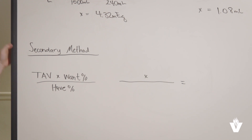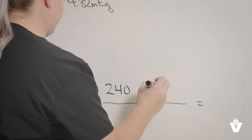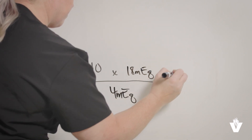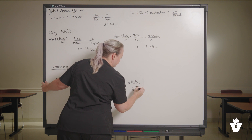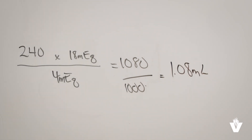There is a secondary way to calculate this for the additives as well. You can use the total actual volume multiplied by the desired milliequivalents — wanted based on the order — and divide that by the in-stock milliequivalents. The only difference is that because the order is based on liters and the pharmacy stock is based on milliliters, there will be one extra step at the end. For sodium chloride: 240 milliliters multiplied by 18 milliequivalents, divided by 4 milliequivalents, totals 1,080. That is then divided by 1,000 due to the order being based on milliequivalents per liter, giving a final answer of 1.08 milliliters required to fulfill the order.